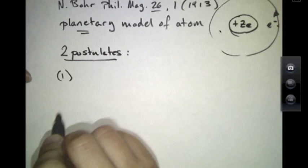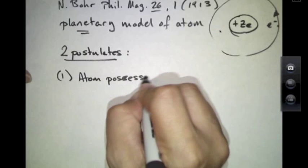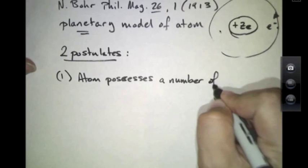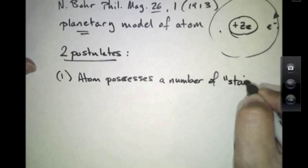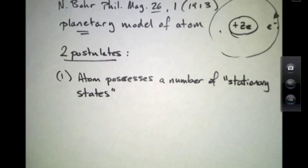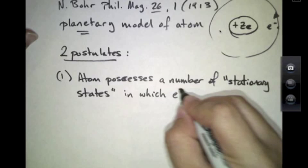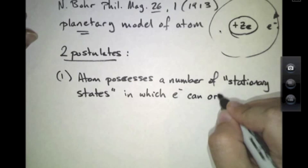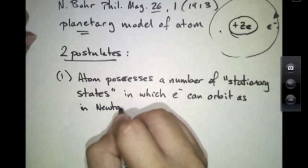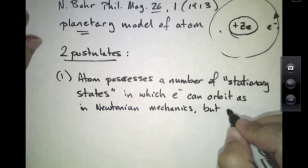The first is that the atom possesses a number of what he called stationary states. In these stationary states, the electron is allowed to orbit but it does not radiate energy.